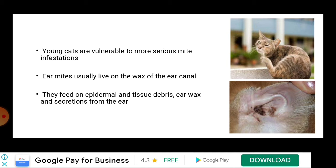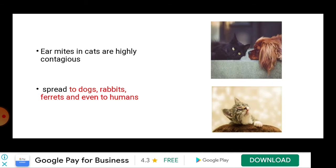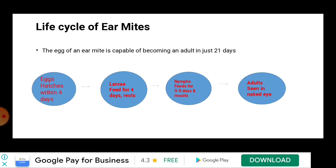As cats have the habit of sleeping in a coiled position, there may be chances of ear mites being present in the tail area as well. Ear mites in cats are highly contagious and can spread to dogs, rabbits, ferrets, and even human beings through close contact with affected animals, so we need to take care of ourselves also.